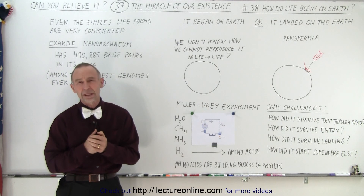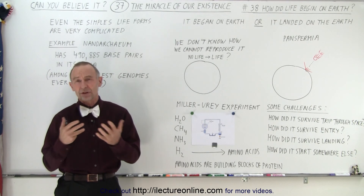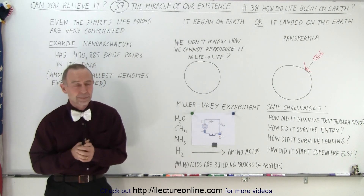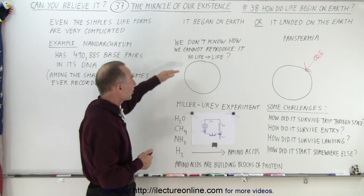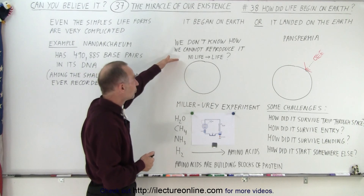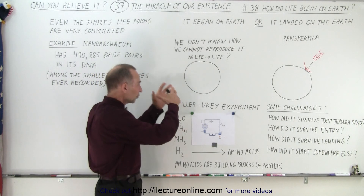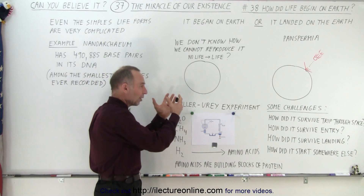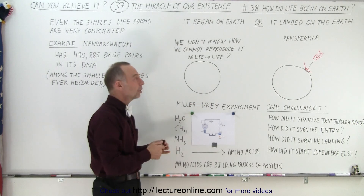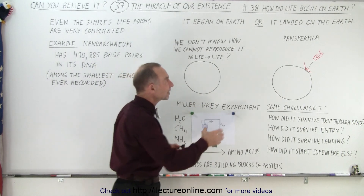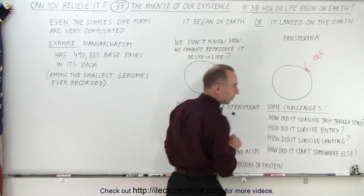There really are only two possible ways in which life could have started. Either it started on its own — from a condition on the Earth where there was no life and then somehow life formed — or life came here from outside the Earth.